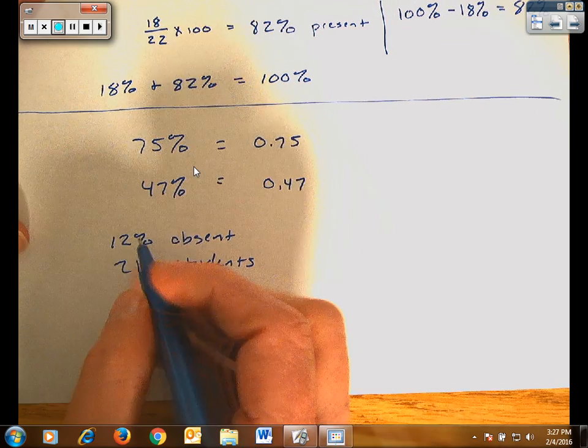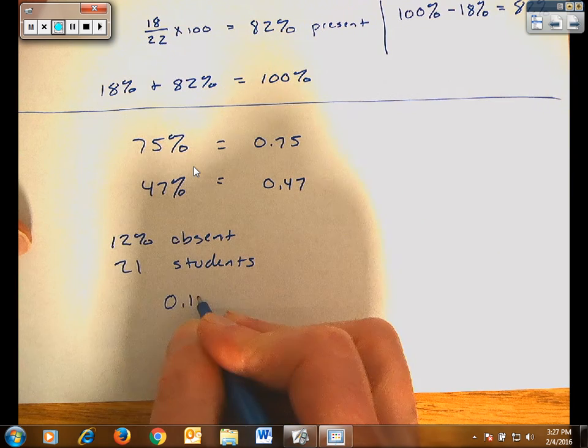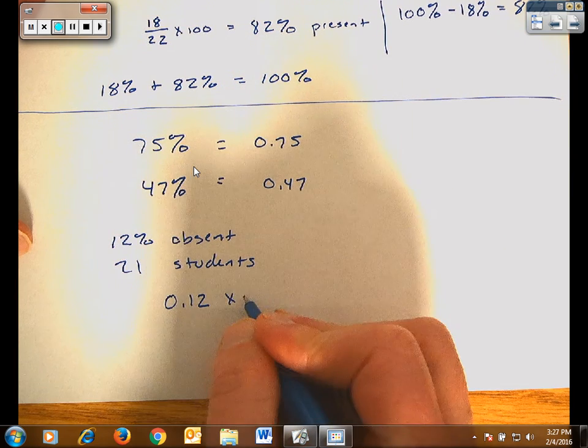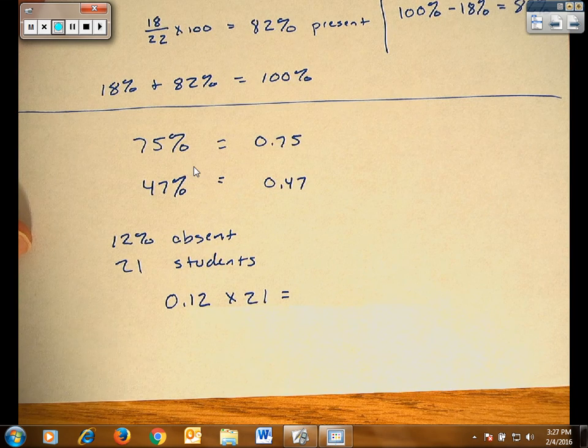And I want to know how many of my students were missing. Well, what I'd have to do is convert that percentage to a decimal and multiply it by my number of students. 0.12 times 21.